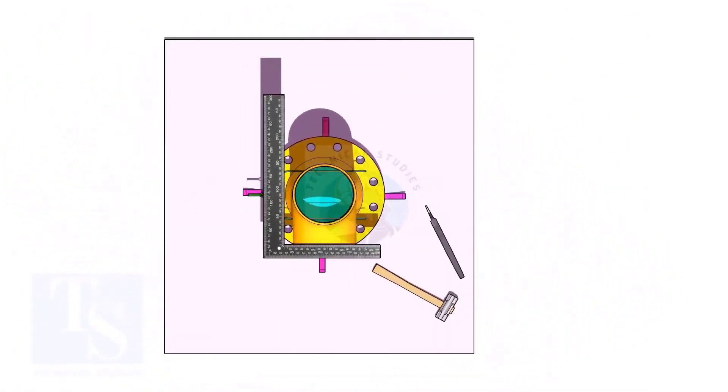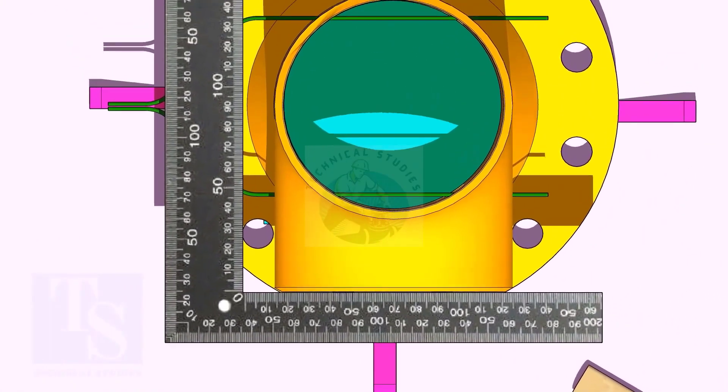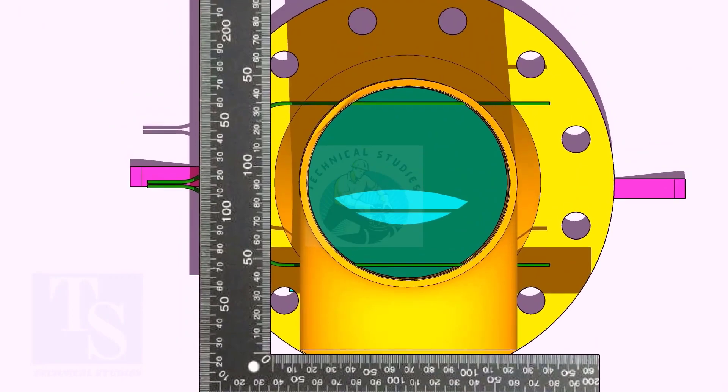Match the hole center of the flange and the tee face as shown. Correct the overlap.